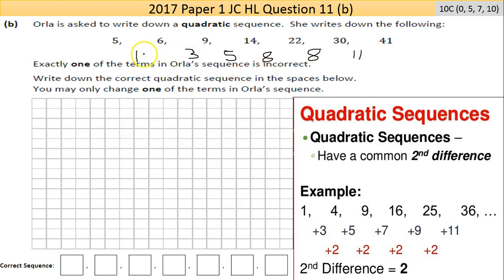Now the difference there is 2, 2, 3, 0, and 3. That's not a quadratic sequence. That second difference between those differences should be equal.